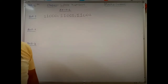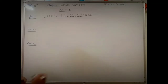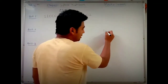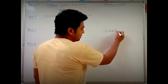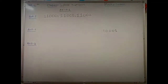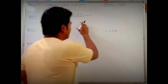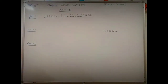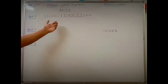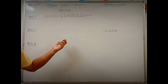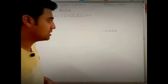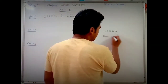Question 2 says: write the three whole numbers occurring just before 100001. Numbers occurring before means smaller than the given number. In Question 1 we added 1 to find the next numbers; here we subtract 1 to find the numbers just before.